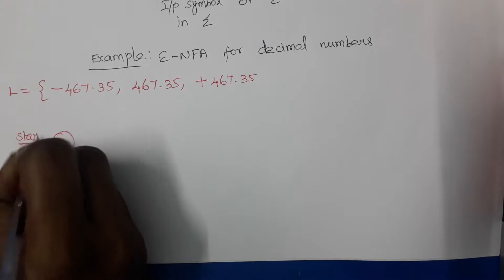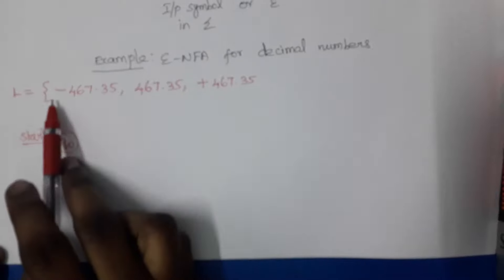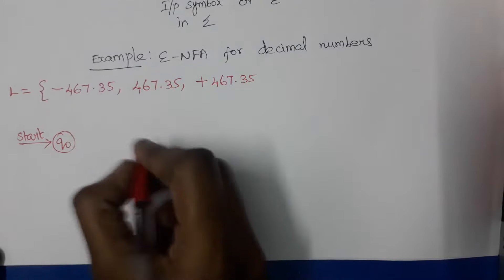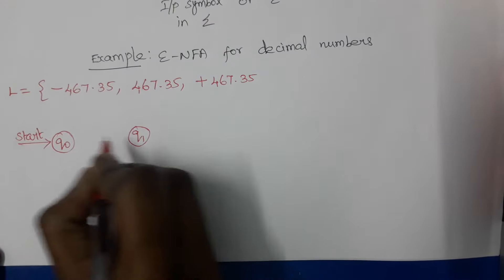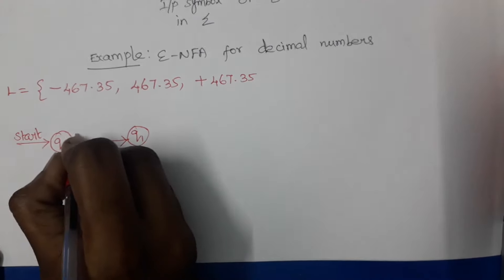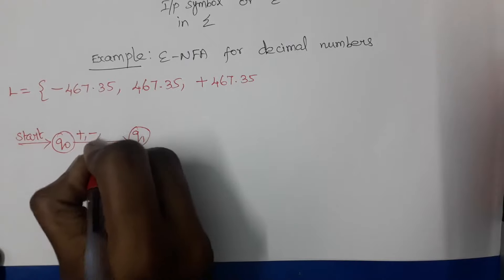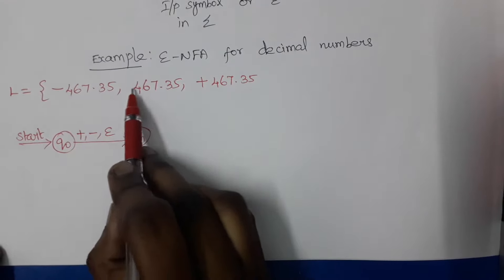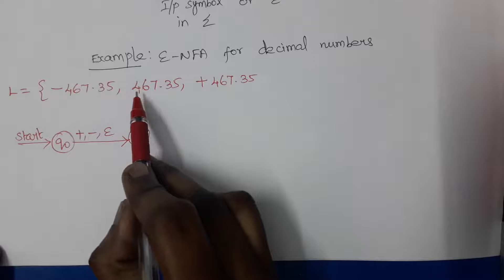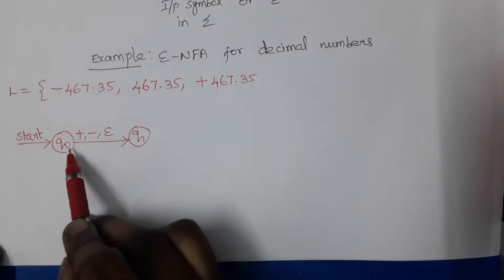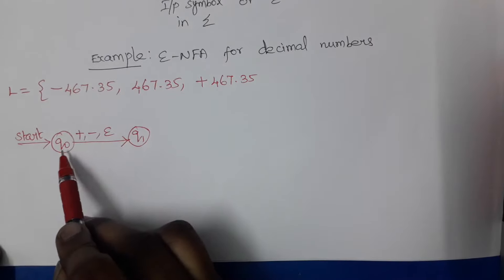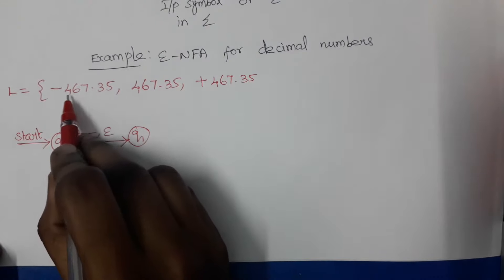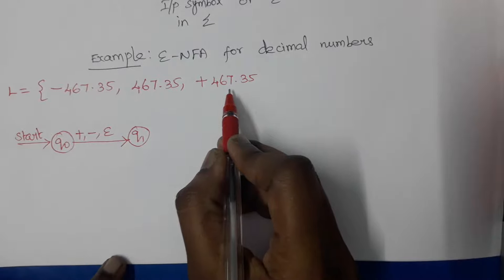We will start constructing the Epsilon NFA. Assume q-naught is the start state. The first input symbol of the decimal number may be a sign — it may be minus, plus, or optional. So from state q-naught to q1 there must be a transition labeled by plus, minus, or epsilon. If we consider input without reading the sign, it should change state from q-naught to q1 following an epsilon transition.